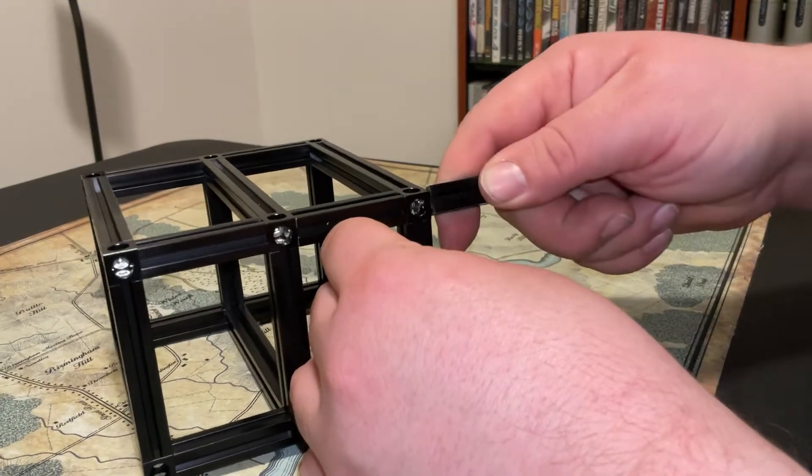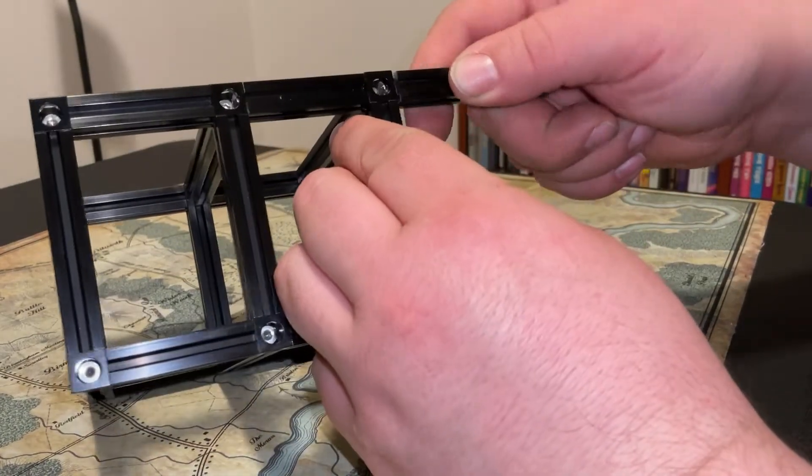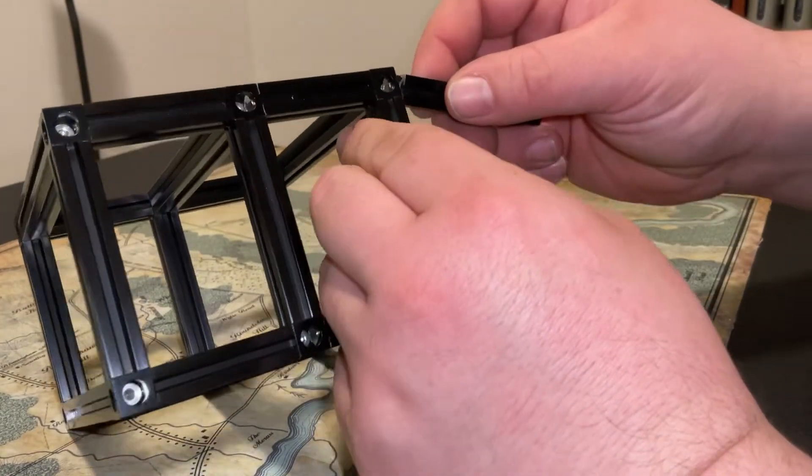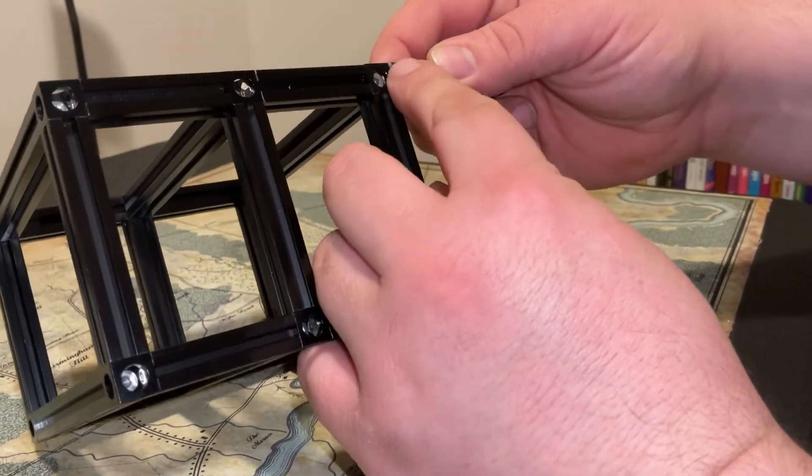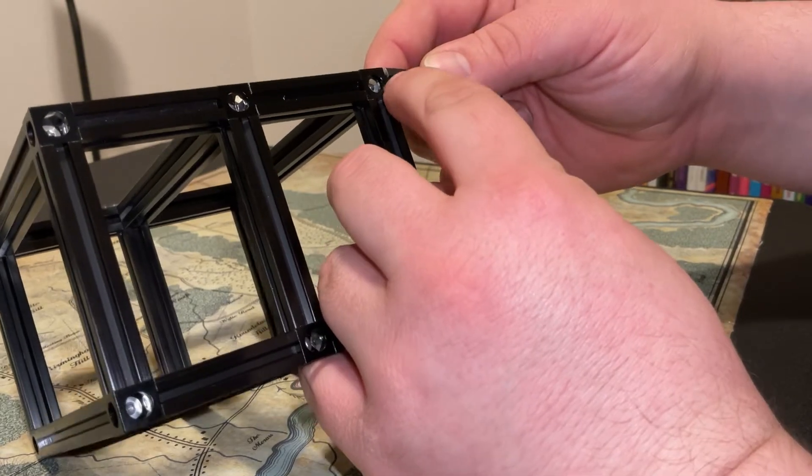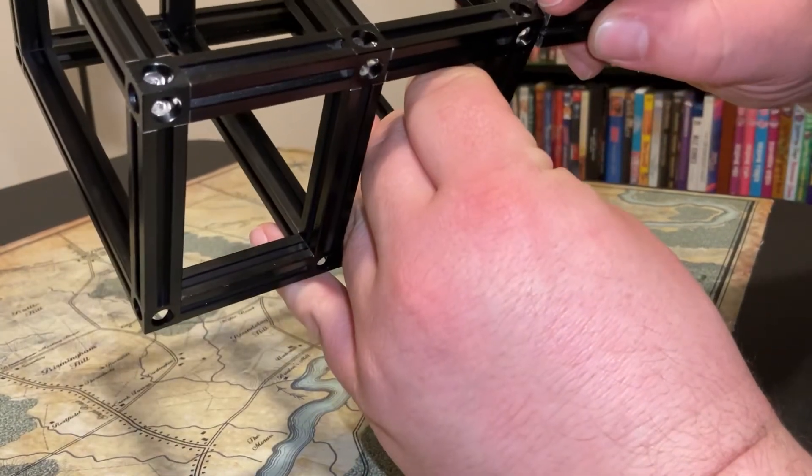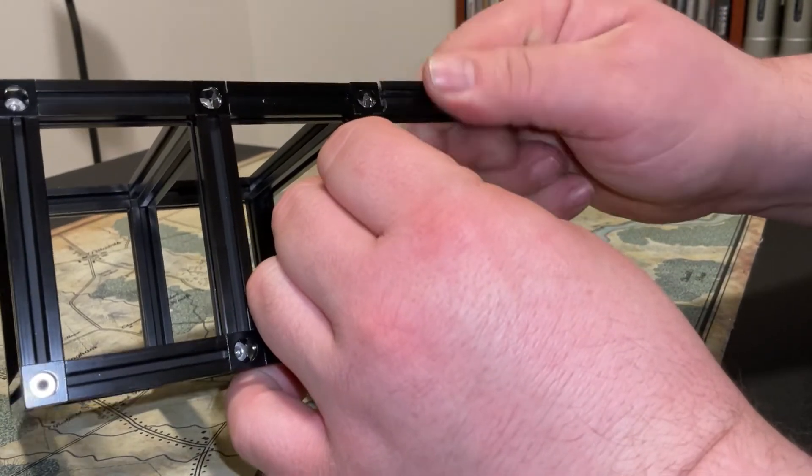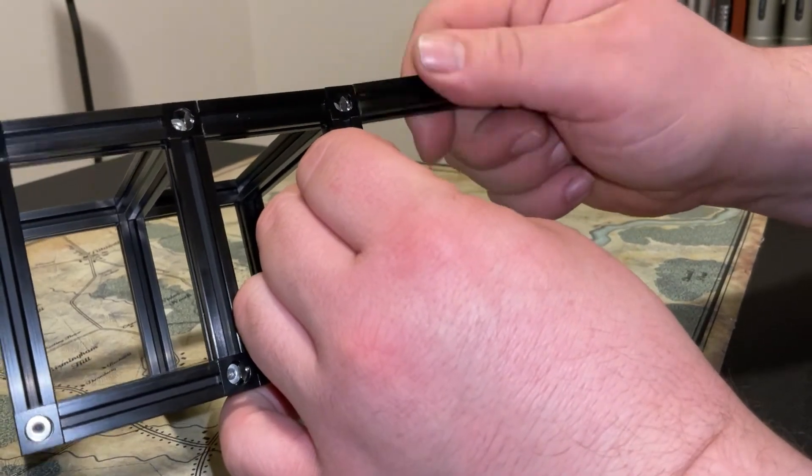...and then lock it into one of the open holes you would normally put your screwdriver through or your Allen wrench. The important part is to make sure that the corners are lining up in the two circles. Put a little tension on it and spin it down until it locks.